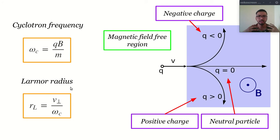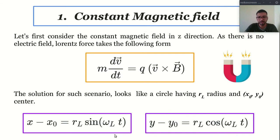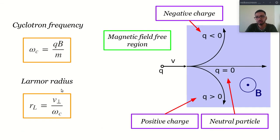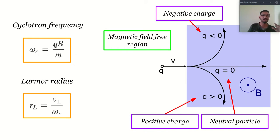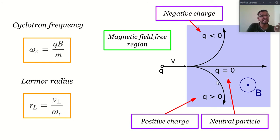Here is the more physical meaning of this equation. This is the equation of cyclotron frequency — this omega C, not omega L. This omega C is basically QB over M, where Q is the charge, M is the mass, and B is the external magnetic field. And this R_L is our Larmor radius, where V perpendicular is the perpendicular component of the particle's velocity — perpendicular to our magnetic field. And this omega C is our cyclotron frequency.